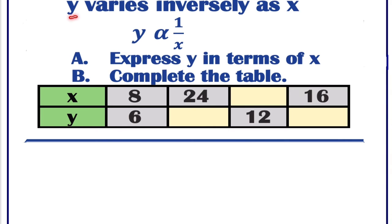If we read the question, y varies inversely as x. So this is y. This is a symbol of variation. Inversely means we need to write 1 over x.